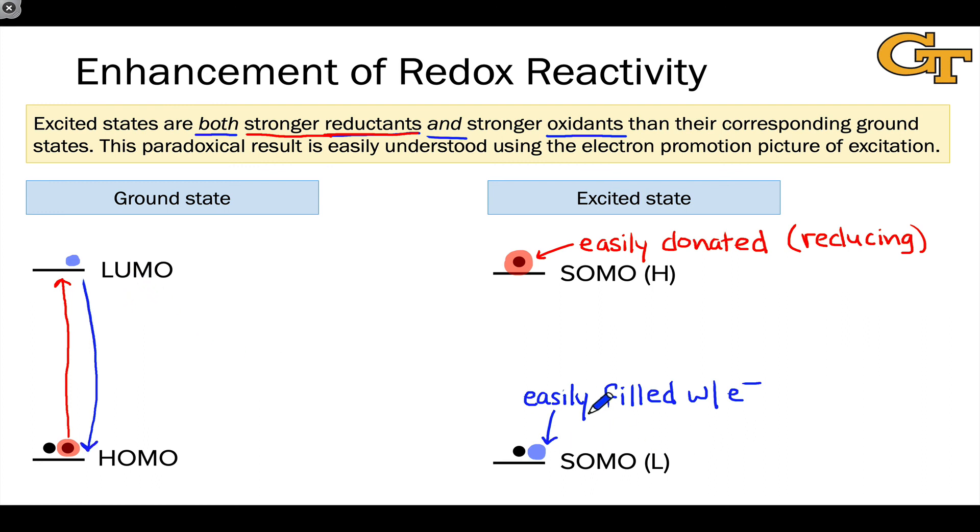Putting an electron into the SOMO-L corresponds to oxidizing wherever the electron came from—pulling an electron away from whatever this excited state is reacting with. This shows that the excited state is quite oxidizing, a much better oxidizing reagent than the ground state is. This explains the stronger oxidizing power of the excited state.